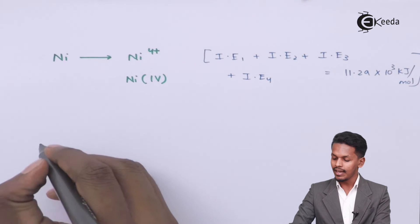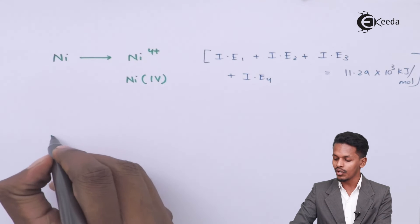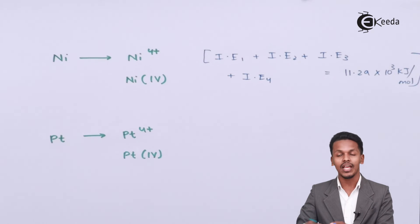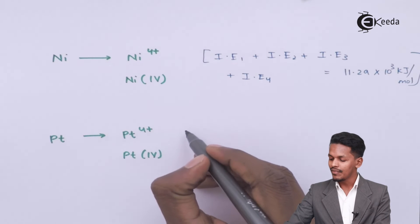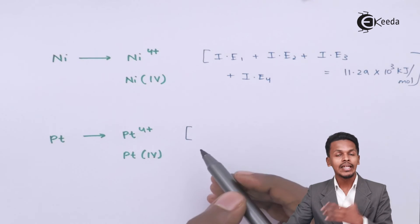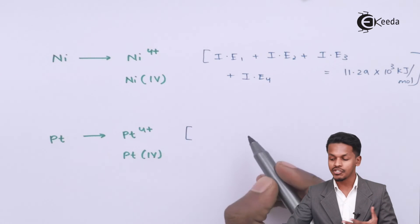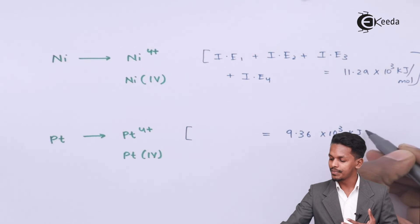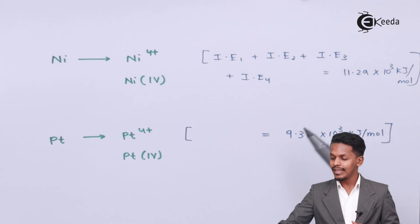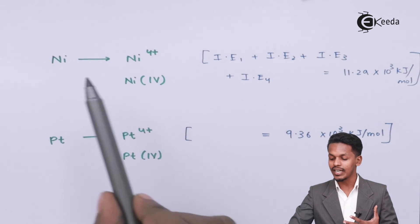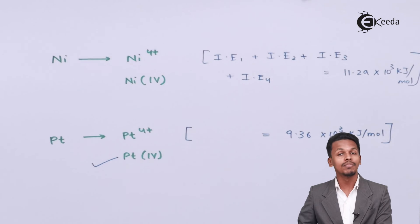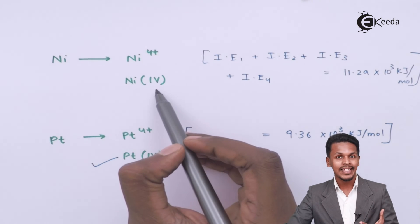For converting platinum to Pt⁴⁺ — where platinum has an oxidation state of +4 — the sum of all four ionization enthalpies (IE1 + IE2 + IE3 + IE4) is 9.36 × 10³ kilojoules per mole. Comparing the two, platinum requires lesser energy to reach the +4 oxidation state, and that is why platinum(IV) compounds are more stable compared to nickel(IV) compounds.